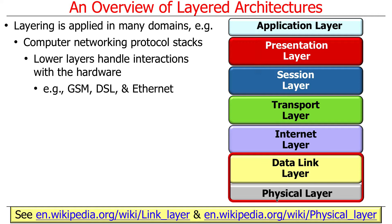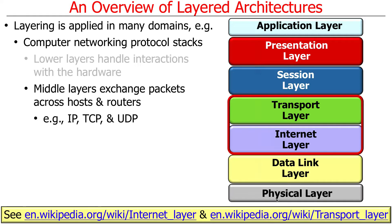The typical layers in a network: the lower layers handle physical interactions with the hardware, the encoding, and the analog-to-digital kinds of transformations — things like GSM, DSL, Ethernet, or LTE. The middle layers in a stack are responsible for moving packets around across processes, hosts, and routers — the flow of data through the Internet or a network — and providing some reliability on top of that: the Internet layer and the transport layer.